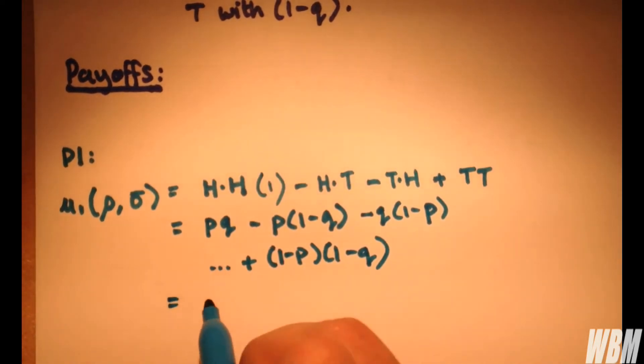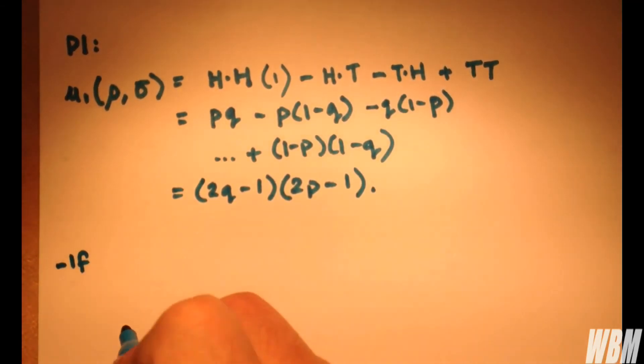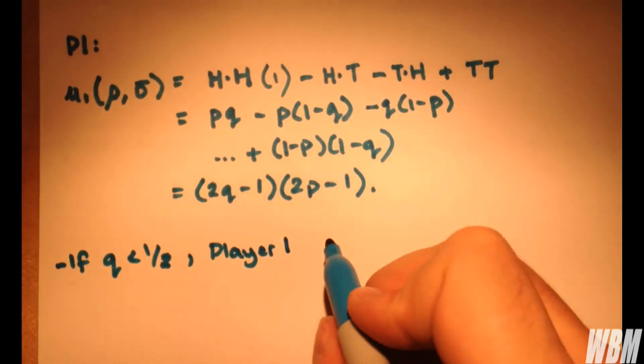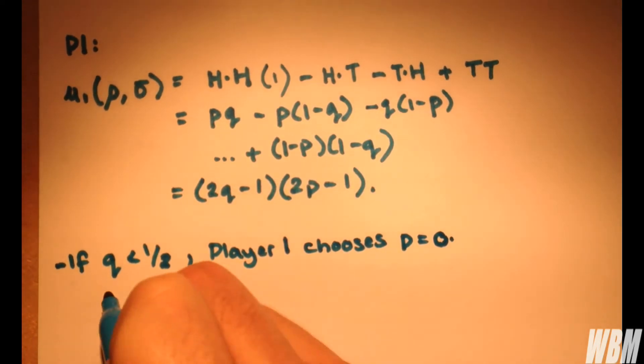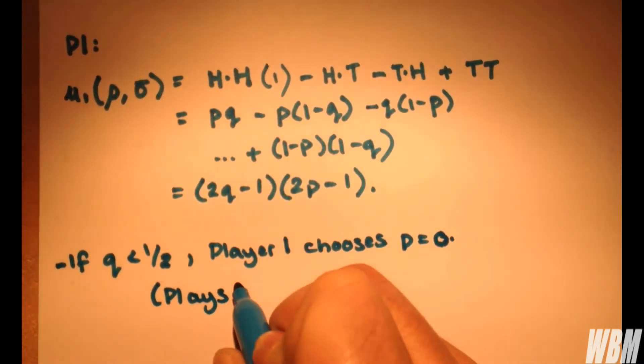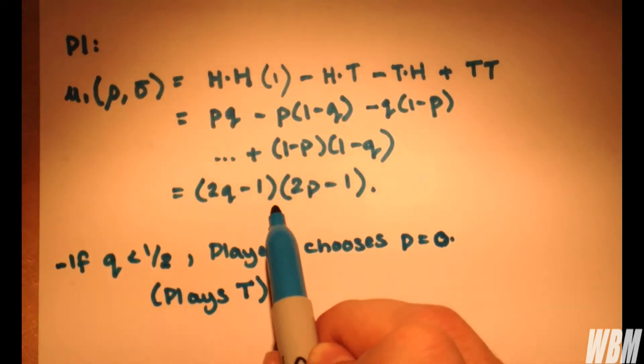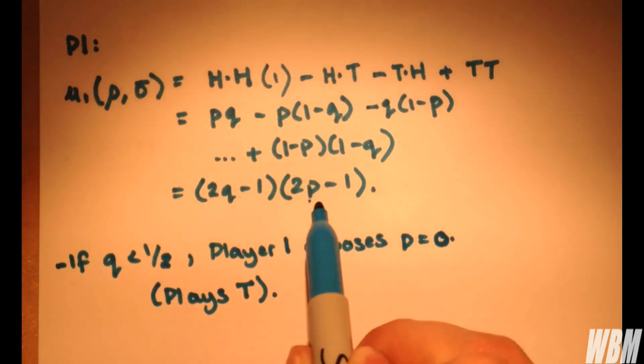We factorize them as (2q-1)(2p-1). So clearly for what we have here, if the value for q is less than half, player one chooses p equals 0 and plays T, which is tails. Why is this? Well if q is less than a half then two lots of less than a half minus 1 will be a negative value. Multiply negative value by another negative value, which will be accomplished by choosing p equals zero, and we have a positive value and a positive utility payoff.